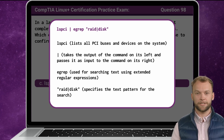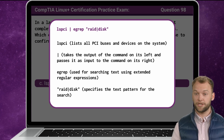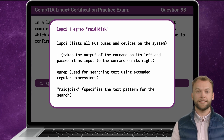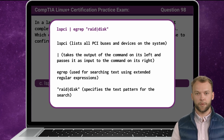The egrep command is used for searching text using extended regular expressions. It filters the input text from the lspci command and prints out arguments that match a specified pattern. The last part is our pattern enclosed in double quotes, specifying what egrep should look for. Here, the pipe symbol functions as a logical OR operator, so egrep will match lines containing either RAID or disk.